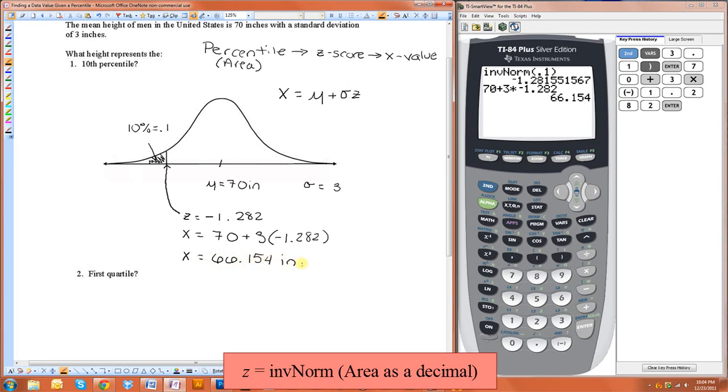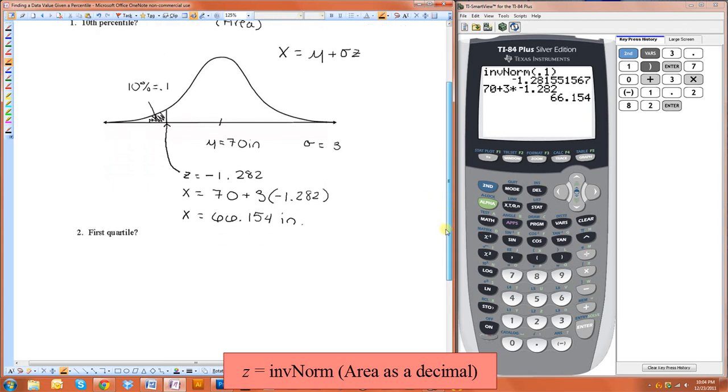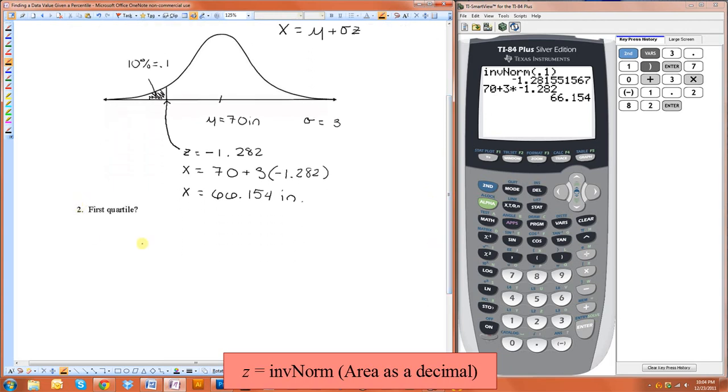So people that are 66.154 inches are in the 10th percentile, which means they are taller than 10% of the men in the United States. Let's try this one. We want to do the first quartile, which is represented by the 25th percentile.